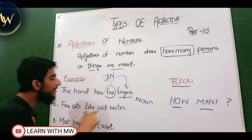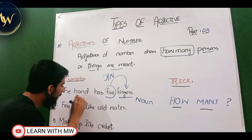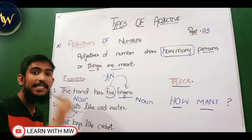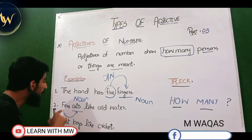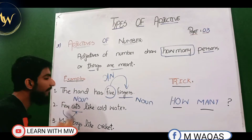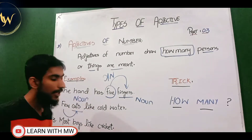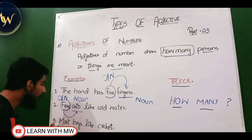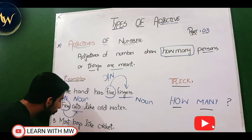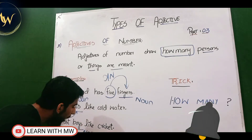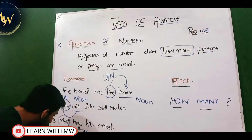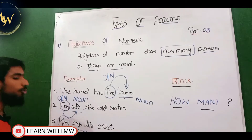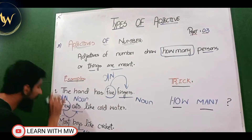Now look at: 'Few kates like cold water.' Kates is basically a noun, and few adds meaning to the noun. If I question 'how many,' few basically answers how many — so few is basically adjective of number. Also: 'Most boys like cricket.' Boys is basically a noun, and most adds meaning to the noun. It answers the question how many boys like cricket, so most is basically adjective of number.